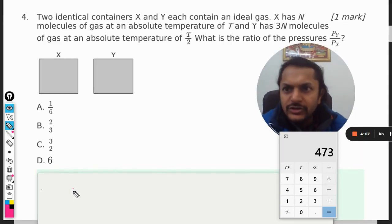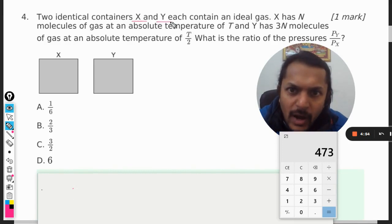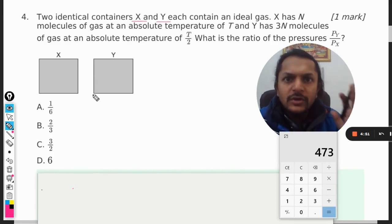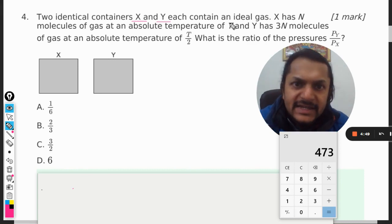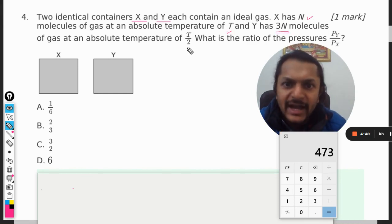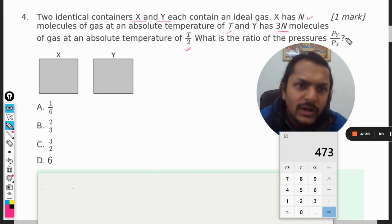Okay dear student, let us see how to do this question. Two identical containers X and Y, it means volume will be taken same for both of them. Each contains an ideal gas. X has N molecules of the gas at absolute temperature T, and Y has 3N molecules at the temperature of T/2. What is the ratio of their pressure?